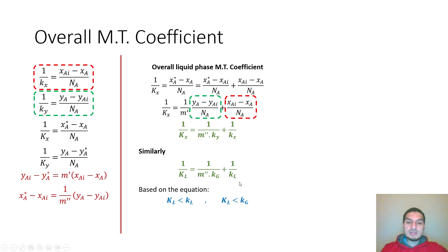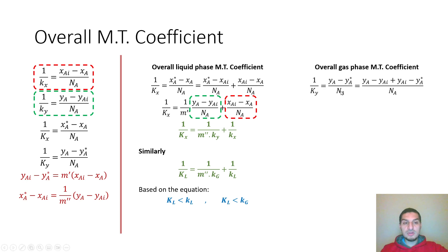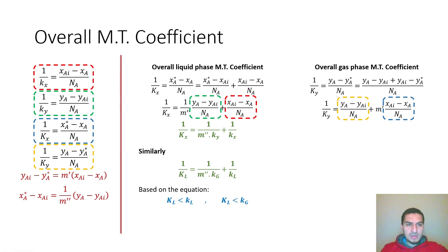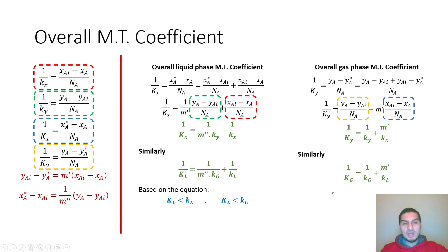For the gas phase, we follow the same procedure: 1/k_y equals (y − y*)/N_A, then we add and subtract y_interface and rearrange. The equation gives terms involving (y − y_interface) and (y_interface − y*). I made a small notation mistake in one term — this should be y_interface, not y*. Regardless, the result is: 1/K_y = 1/k_y + m'/k_x, and the same procedure applies for K_G and K_L.